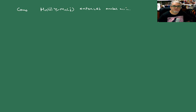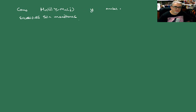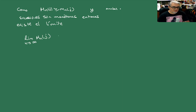Ambas sucesiones son monótonas: los mínimos son crecientes y los máximos son decrecientes. Entonces existe el límite cuando N tiende a infinito de M_N(J) menos m_N(J), igual a cero.